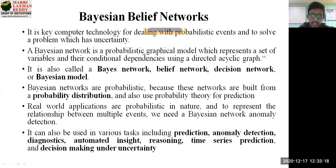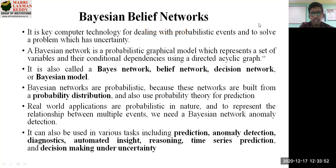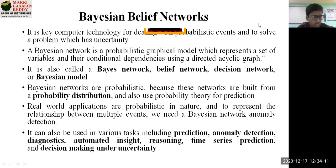The next concept is Bayesian Belief Network, which is a very important algorithm with respect to probability for decision making. As the name says, it is a Bayesian model that relies on Bayes' theorem. It is a key computer technology for dealing with probabilistic events and solving problems that have uncertainty. It is also called a Bayes network, and it has many different names.